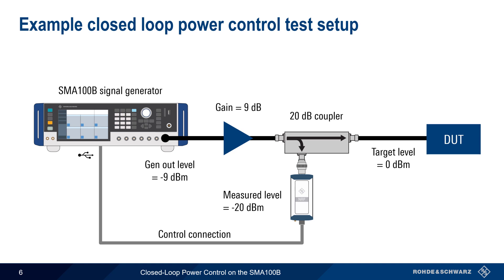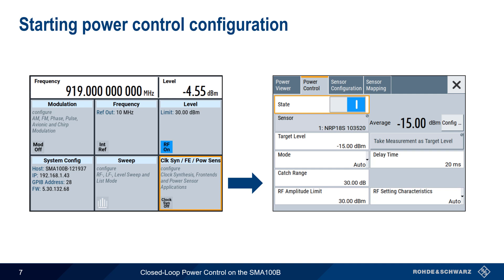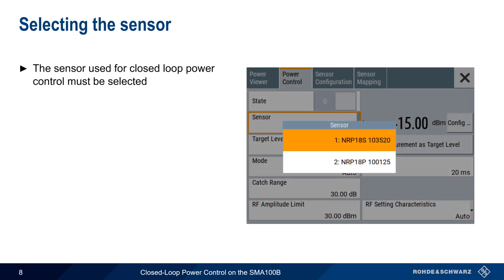In the remainder of this presentation, we'll show step-by-step how to configure closed-loop power control using the SMA100B and an NRP series power sensor. On the SMA100B, power control is configured by first clicking on the Clock Synthesis FE Power Sensor tile in the main GUI. Power control is then configured by clicking on the Power Control tab. Note that power control is configured entirely through the SMA's GUI — no external software or control PC is required.